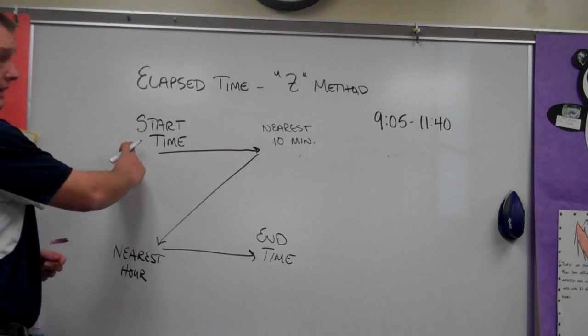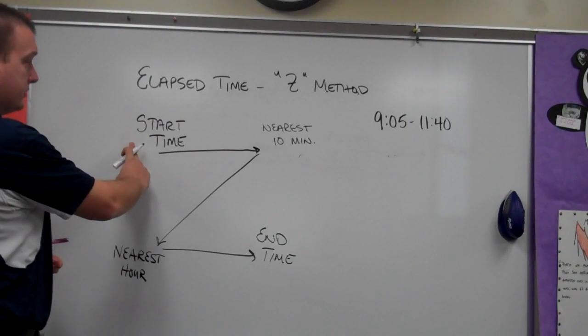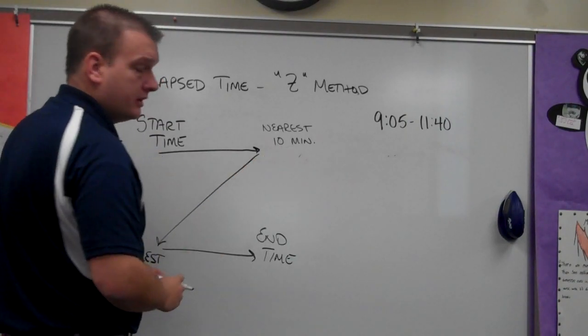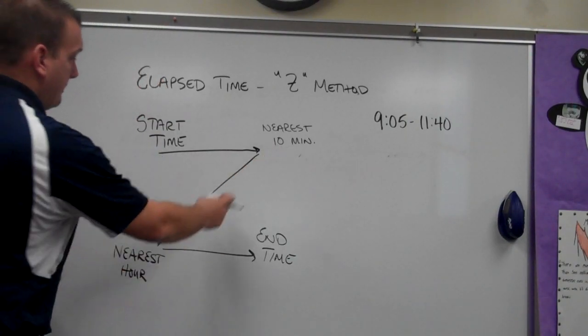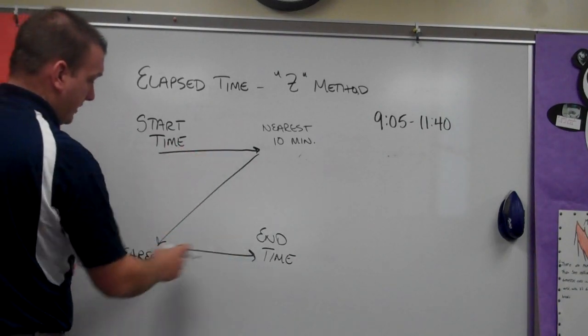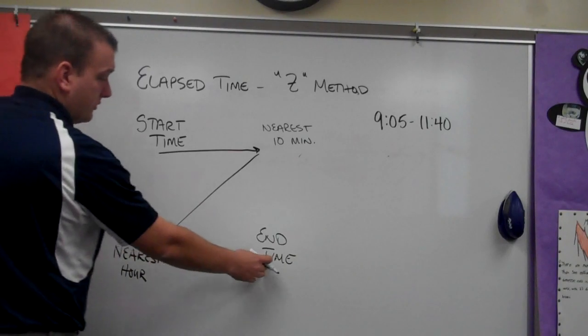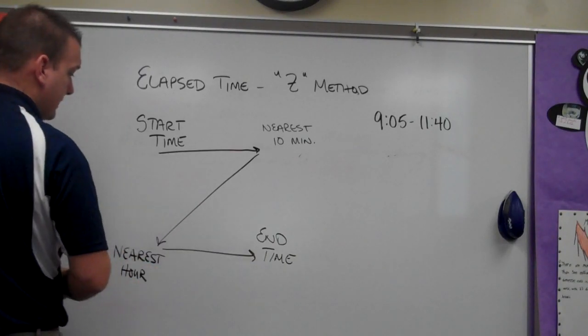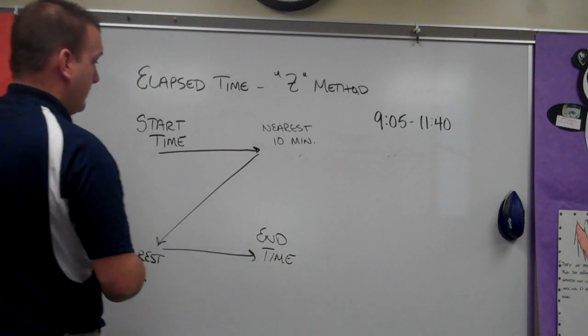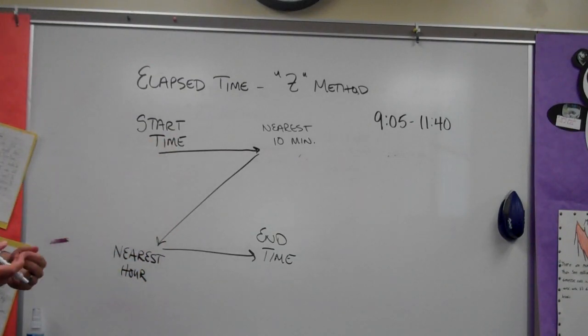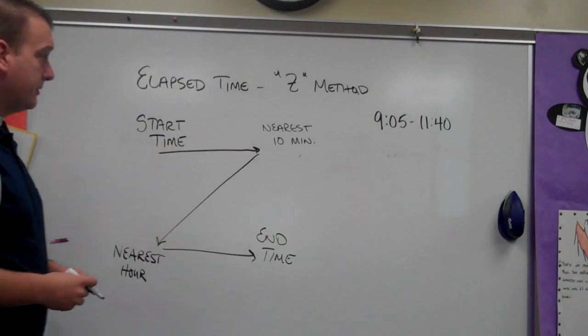First we have to start with a beginning time, or what I call our start time. We're going to move to the nearest ten minutes. And then we make this Z-looking figure here. So we go from the nearest ten minutes to the nearest hour closest to the end time. And then the last piece is our end time. And then we add up the numbers in the middle to calculate the elapsed time.